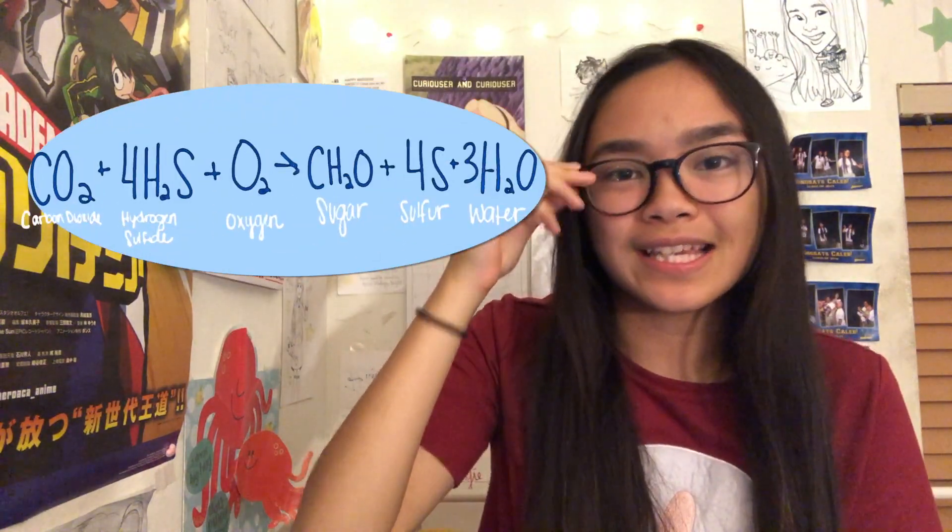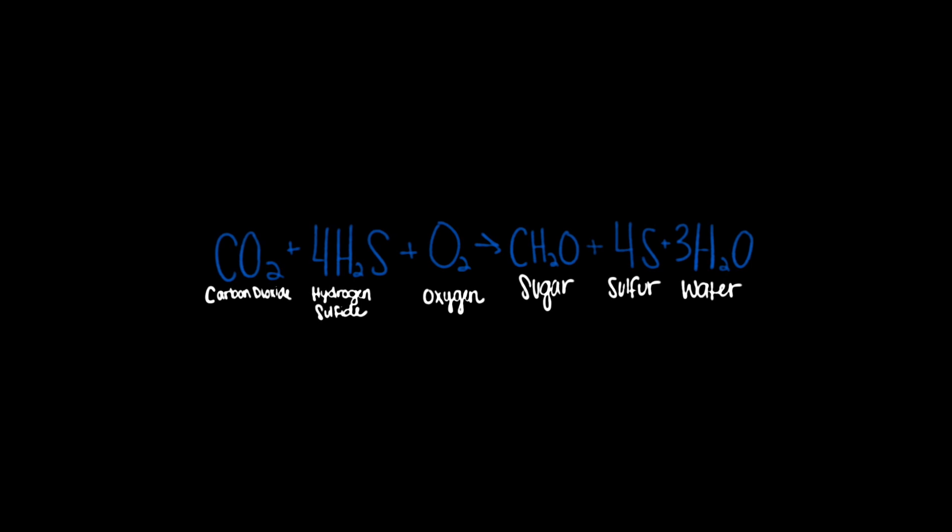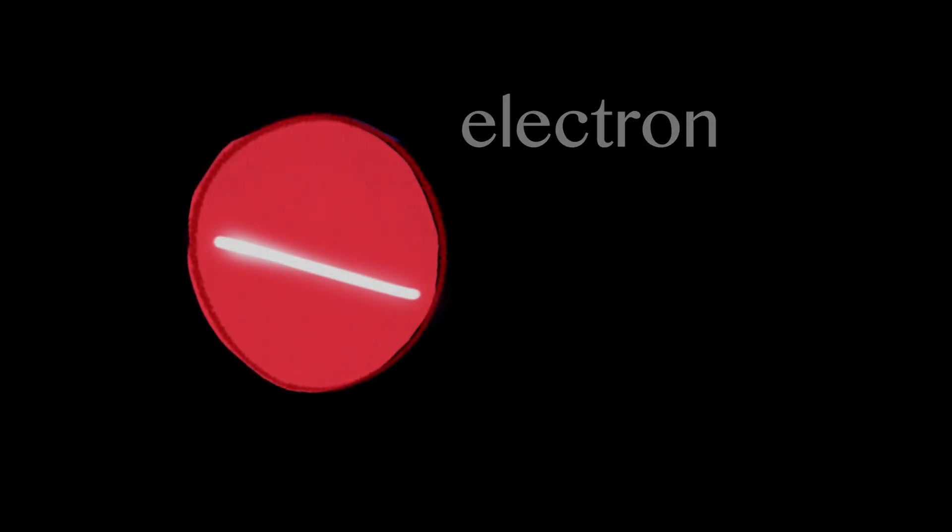For example, bacteria at the bottom of the ocean actually use hydrogen sulfide coming from hydrothermal vents to produce sugar. This specific example of chemosynthesis is represented by this reaction. Time to see this reaction in action, from electron to sustaining consumer.